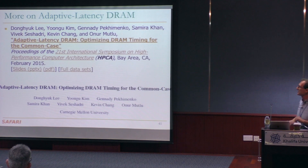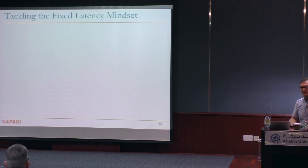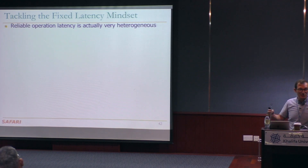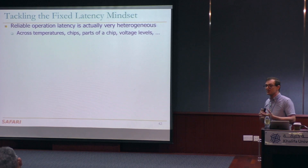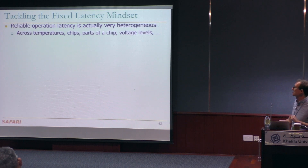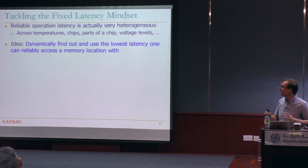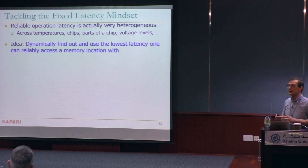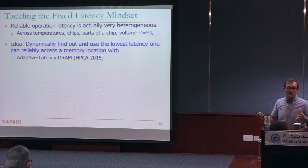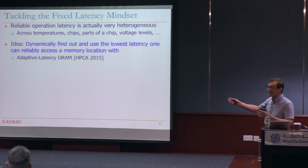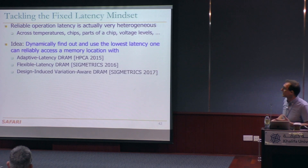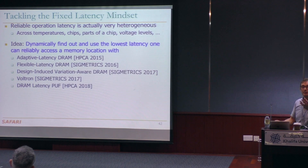This is really about tackling the fixed latency mindset. The way we're treating memory structures today is not very optimized. Reliable operation latency is actually very heterogeneous across temperatures, chips, parts of a chip, and different voltage levels. The idea we've been following is to have an intelligent controller — intelligent mechanisms that dynamically during operation find out the lowest latency at which a memory location can be reliably accessed — so that you can actually reduce the latency significantly, or get some other benefits. You can also trade off between voltage and latency, as in our Voltron work.